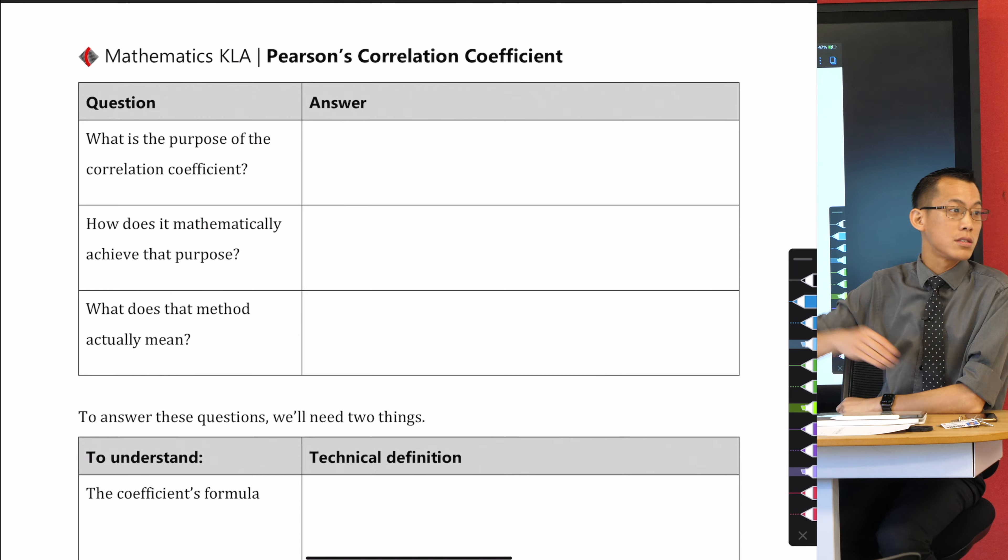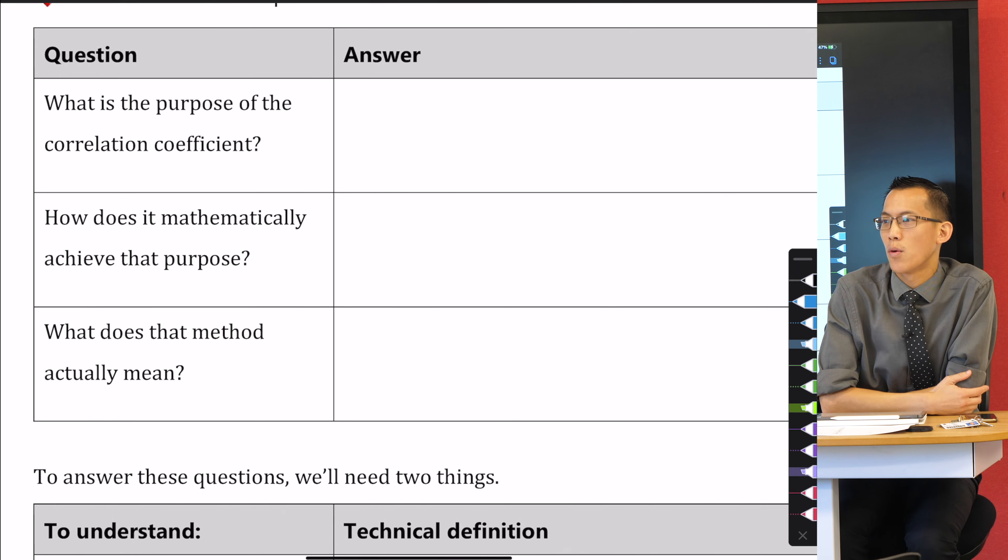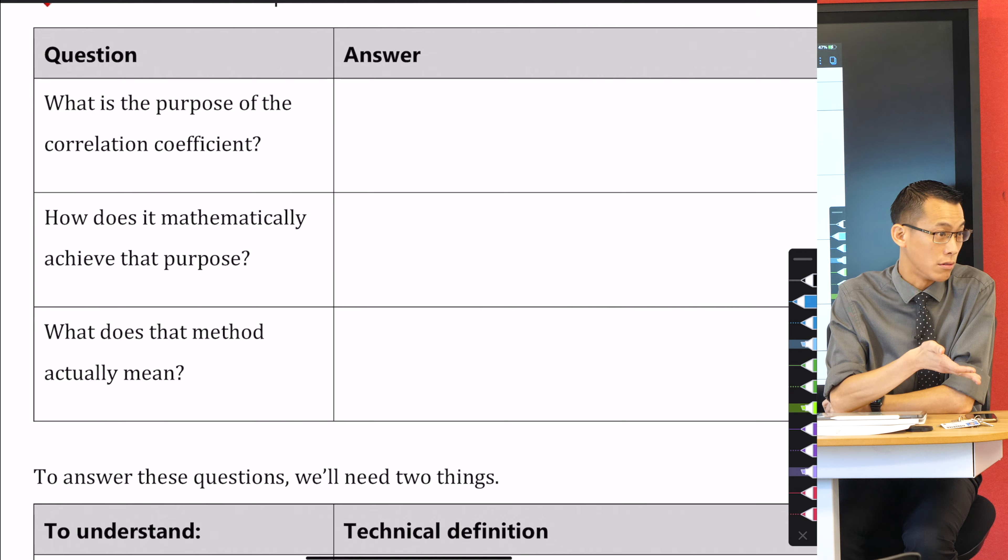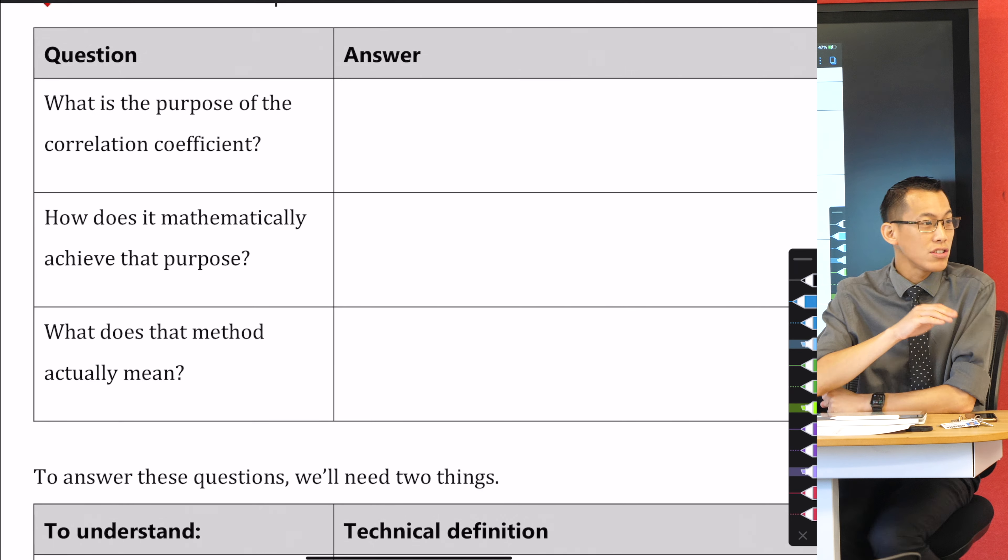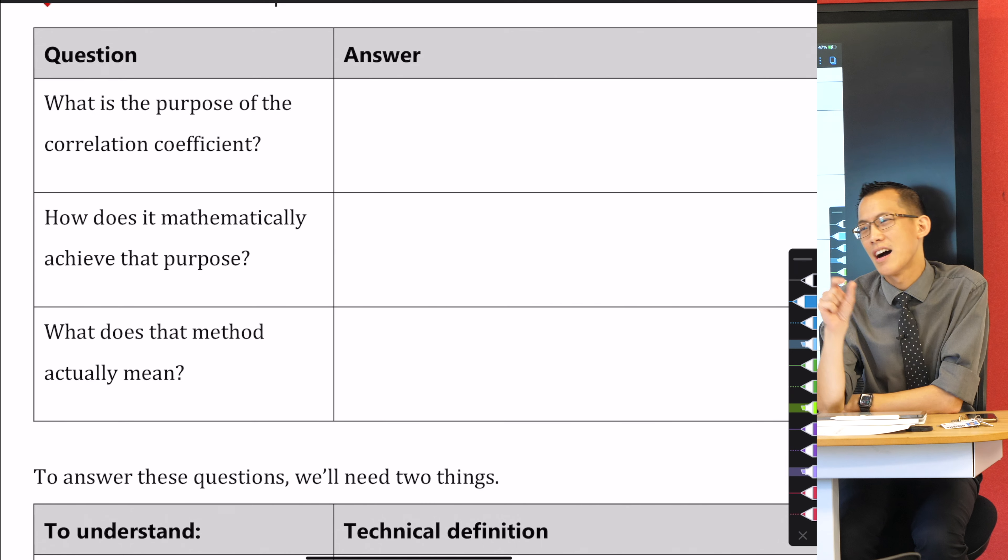There are these three key questions that I want us all to know. You can calculate Pearson's correlation coefficient—the calculator will do it for you—but I'm actually not interested in you guys being able to calculate it. I mean I tell a lie, I'm a little bit interested.